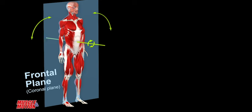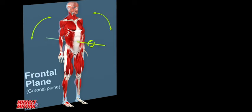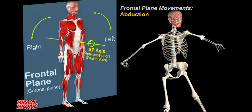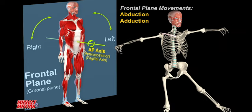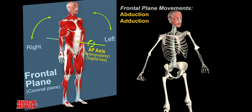The frontal plane passes through the body from left to right, dividing the body into anterior and posterior parts. Frontal plane movements are lateral, side-to-side movements.